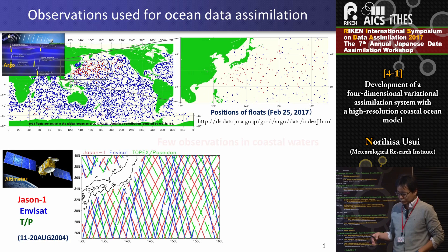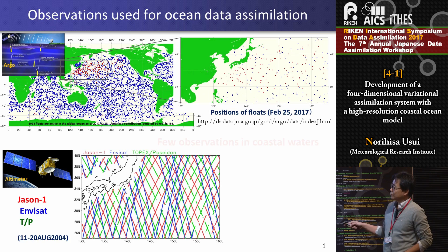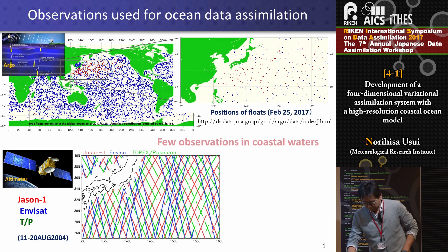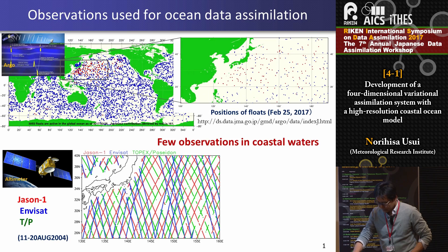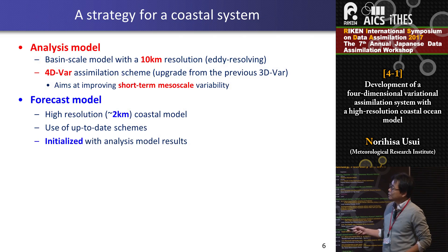So of course we have observations other than this kind of data, but the number of available data is so limited. There are few observations in coastal waters around Japan — it is actually a large issue for coastal data assimilation. In consideration of this observation issue, the basic idea for our coastal system is like this.